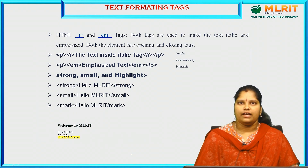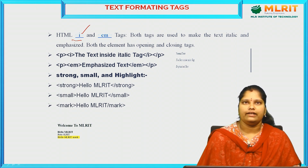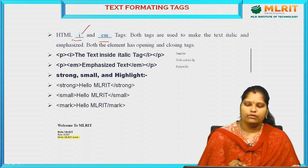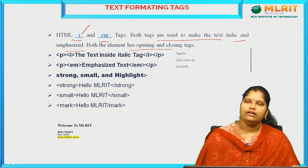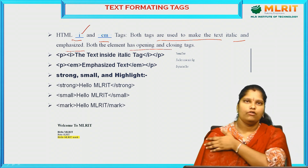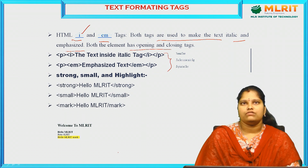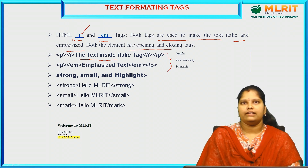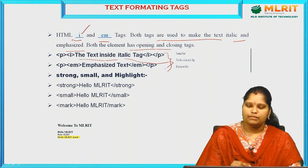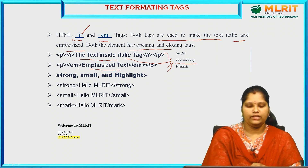For italic formatting, you can use the i (italic) tag or the em (emphasize) tag — both are used to make text italic. Both elements have opening and closing tags. For example, text inside the i tag such as 'text inside italic' is displayed in italic form, and text inside the em tag is also displayed in italic.